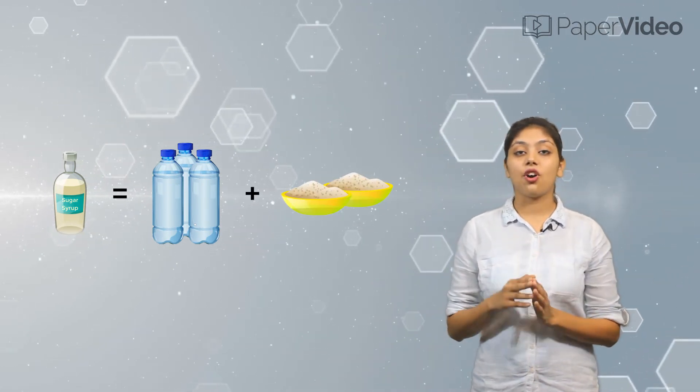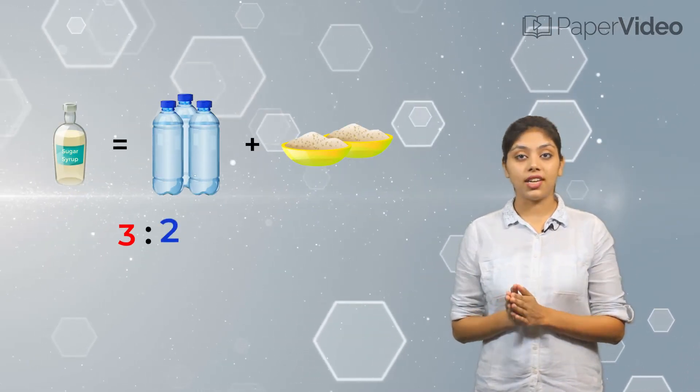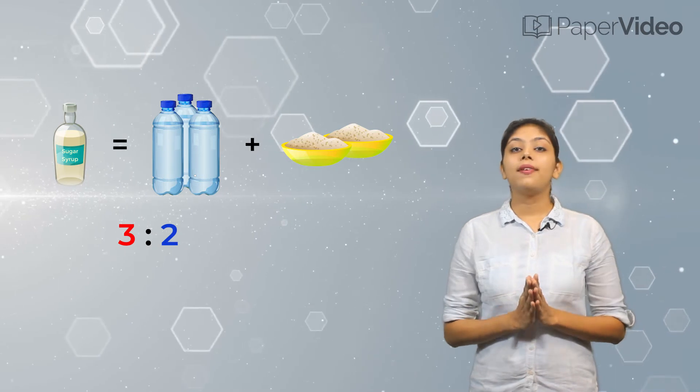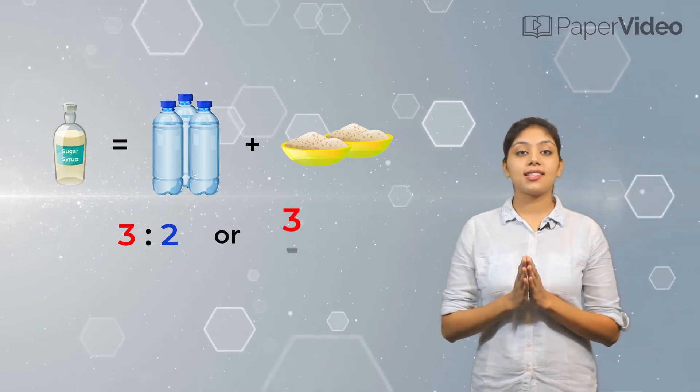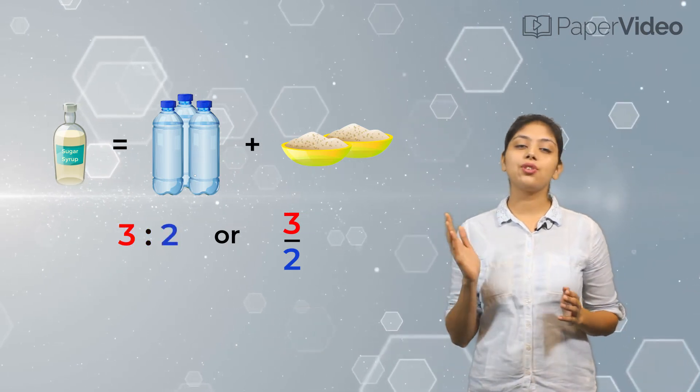This means that the ratio of water to sugar in the sugar syrup must be 3 colon 2. We can also write this ratio as 3 upon 2, and it is read as 3 is to 2.